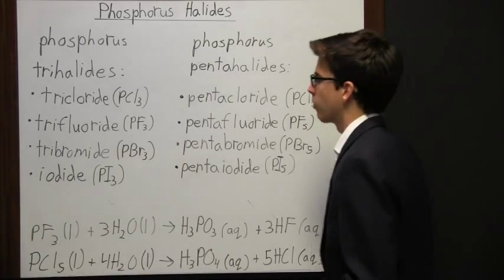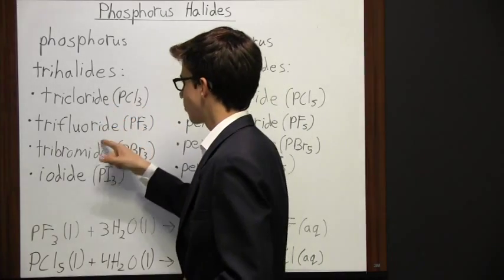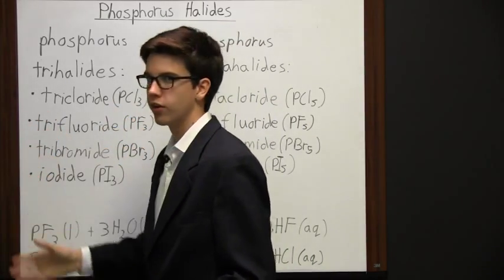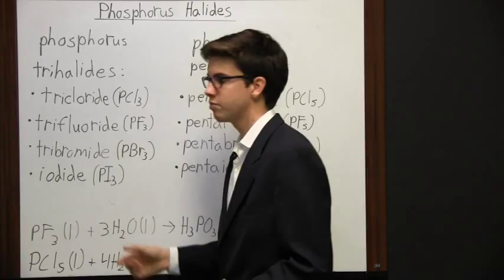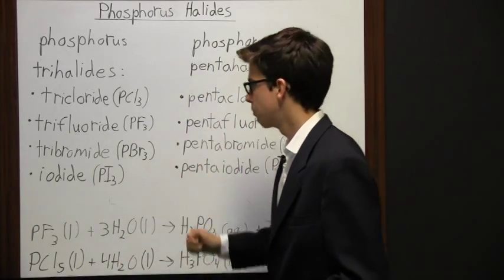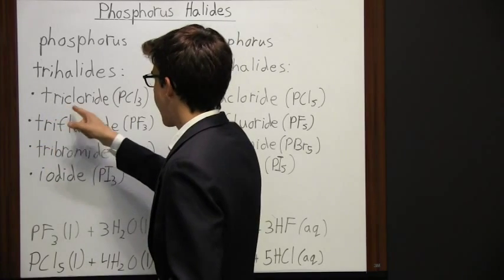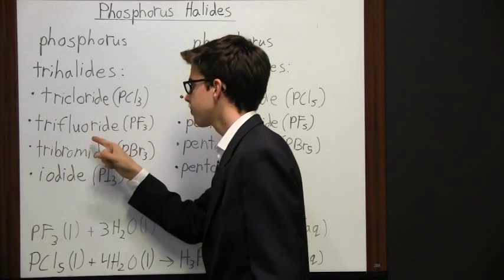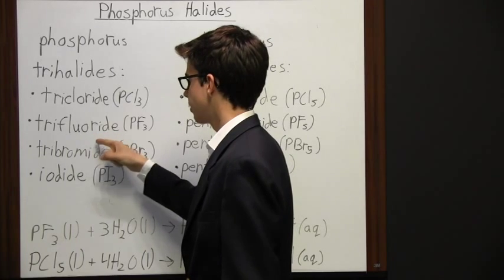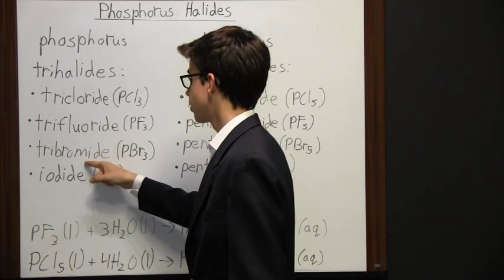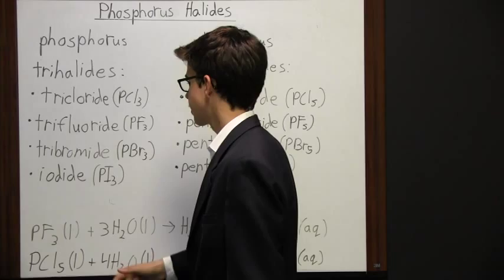Starting with phosphorus trihalides. Right here in front of all these terms I should have the word phosphorus, but I left it out not to be redundant and not to use too much board space. Just assume phosphorus goes before all these terms. So we have phosphorus trichloride (PCl3), phosphorus trifluoride (PF3), phosphorus tribromide (PBr3), and phosphorus iodide (PI3).